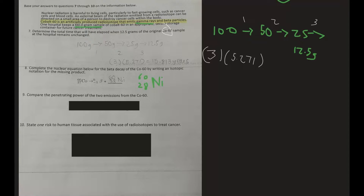Gamma rays have no charge, so when put through a magnetic field they just pass through. Beta particles are negatively charged and will get deflected. Gamma rays have a much stronger penetrating power.